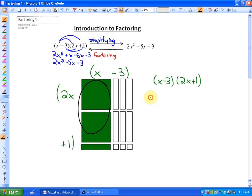These are 2x squareds. These are minus 6xs. This here is a plus x. And these here are a minus 3. So if I collect those like terms, I'm left with 2x squared minus 5x minus 3.